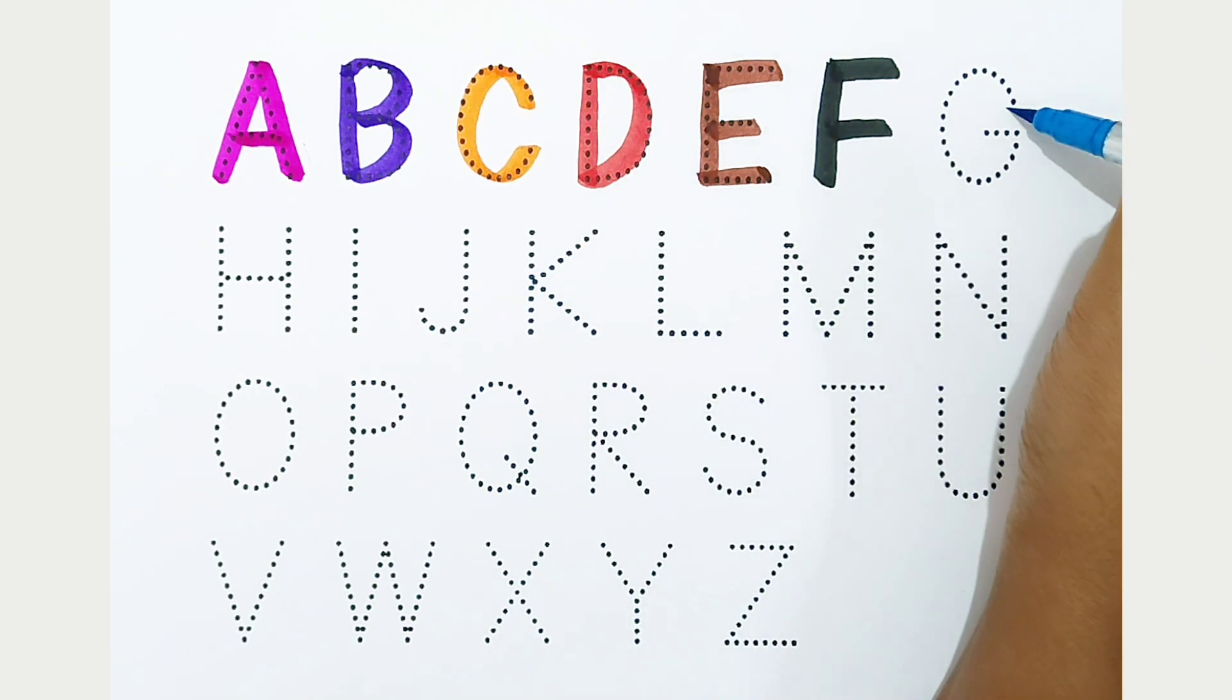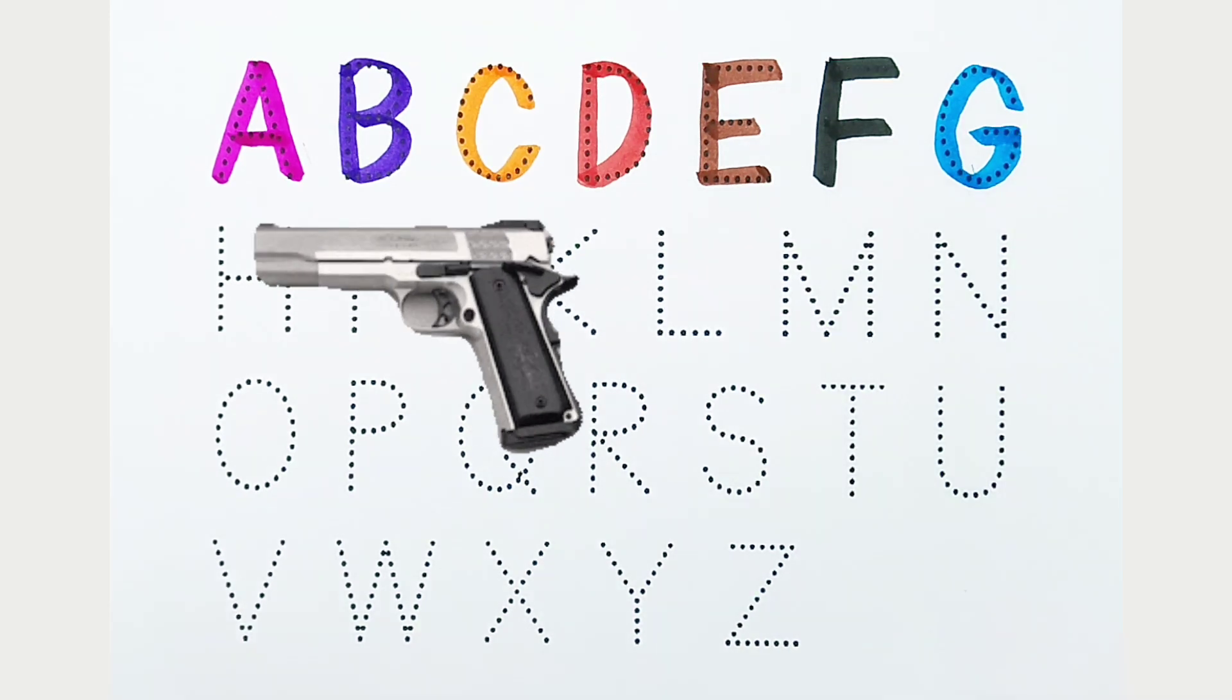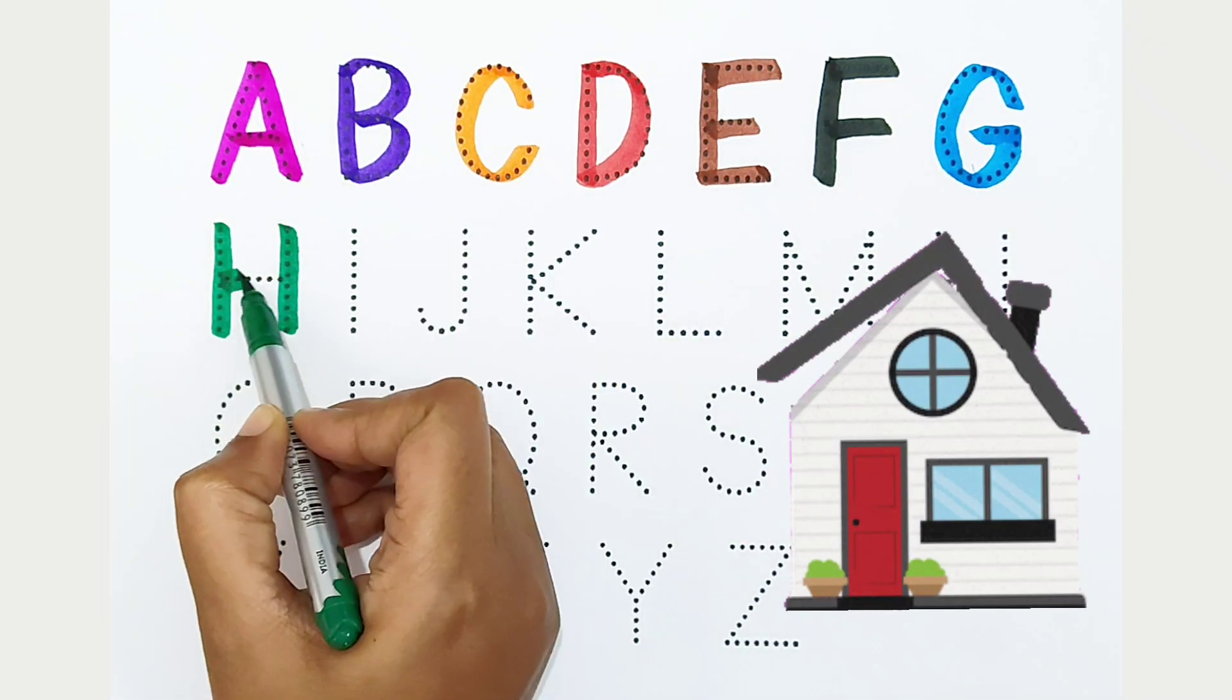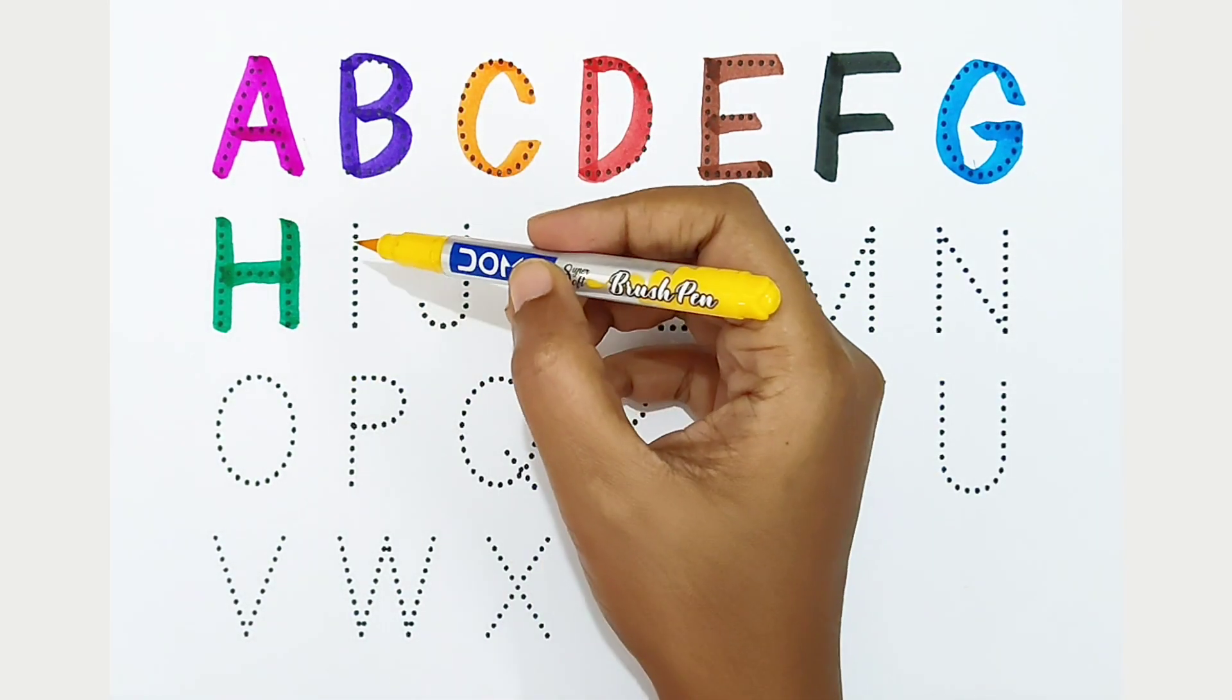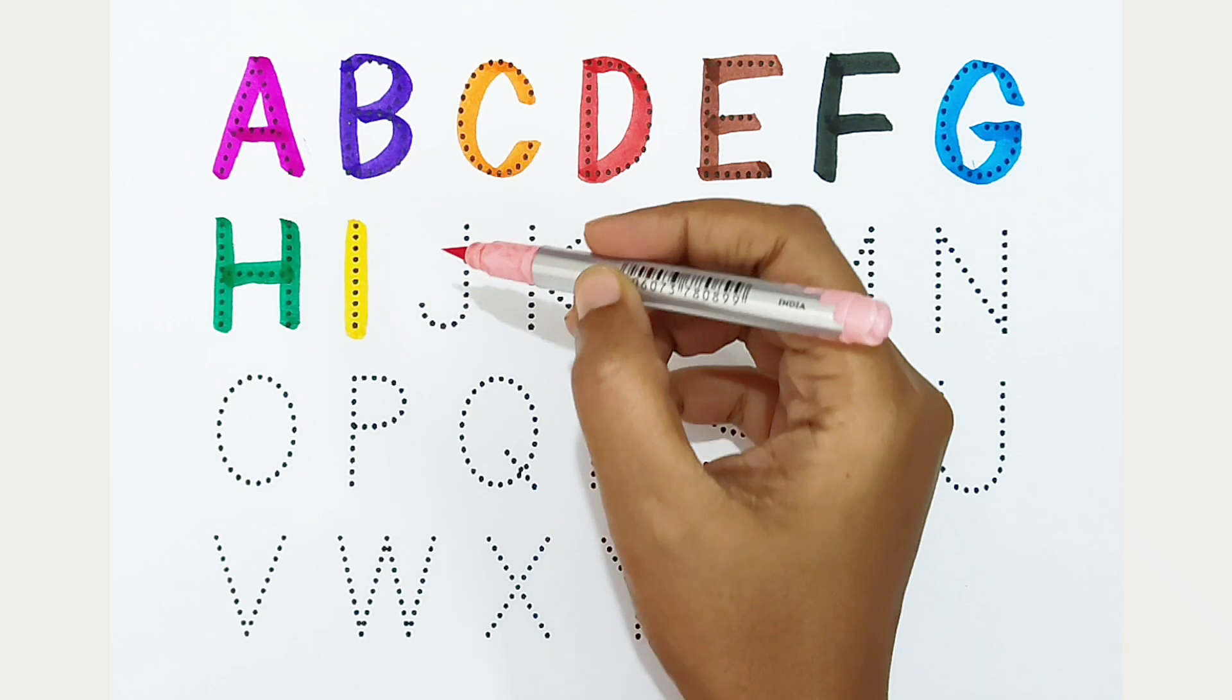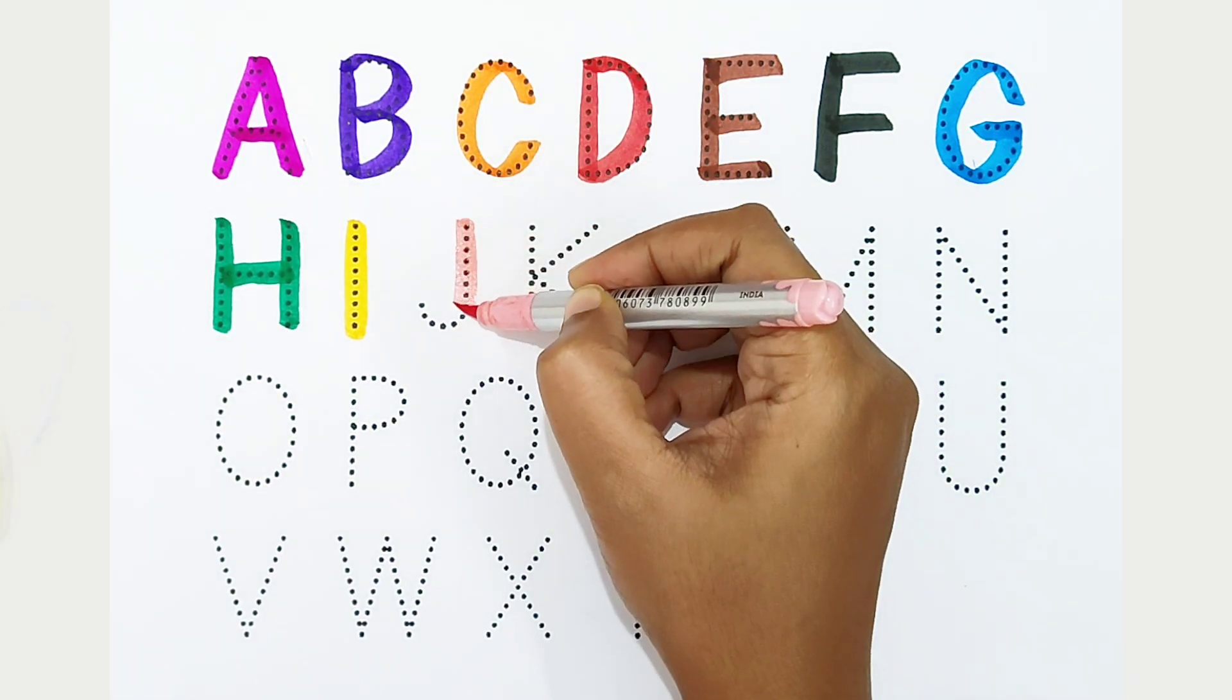G, light blue color. G is for gun. H, dark green color. H is for home. I, yellow color. I is for ice. J, light pink color. J is for jug.